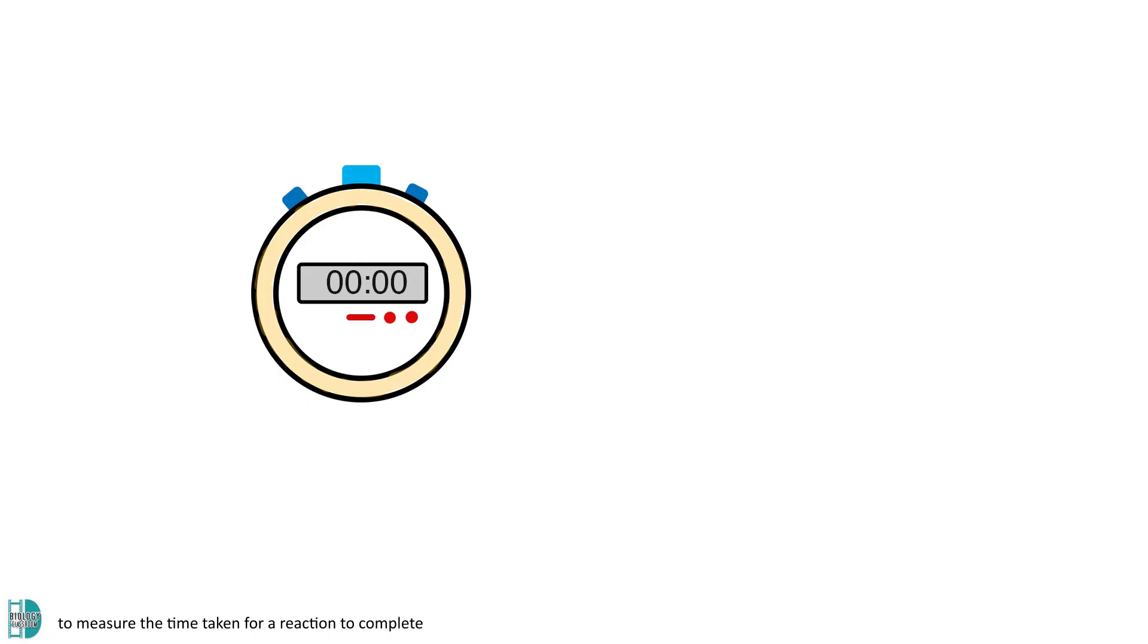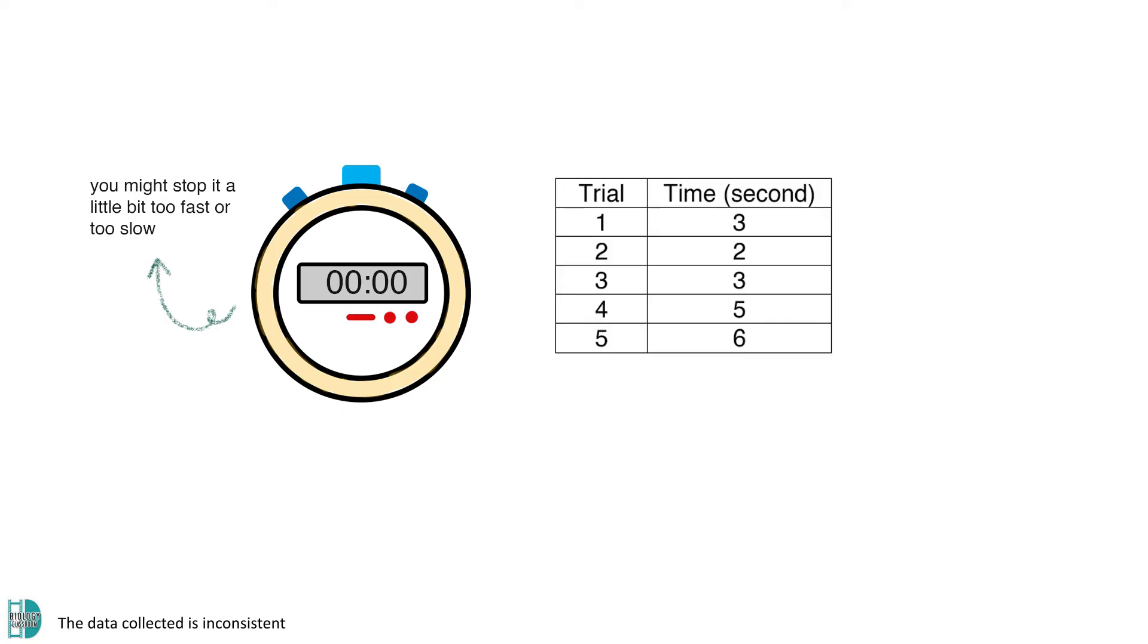For example, when you are using a stopwatch to measure the time taken for a reaction to complete, you might stop the timer a little bit too fast or too slow. The data collected is inconsistent as it can be too long or too short to different extents.